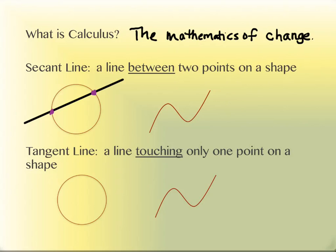We also talk about secant and tangent a little bit differently in trig, which is why I'm avoiding that discussion for the moment. When we talk about a secant line in calculus, it's more like it was when you were talking about it in geometry — in terms of a curve. You're looking at a line that cuts through the curve in two places. That's a secant line. It doesn't matter if it's a circle or if it's a curve.